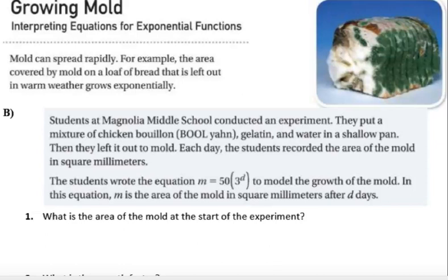All right, so hopefully you gave this a try on your own, but let's see what we got. We'll do these first five, and we'll see if we get to part C on this one. All right, so mold can spread rapidly. Here we go, and students at Magnolia Middle School. The students wrote the equation M equals 50 times 3 to the D power. All right, so it's saying what is the area of the mold at the start of the experiment?